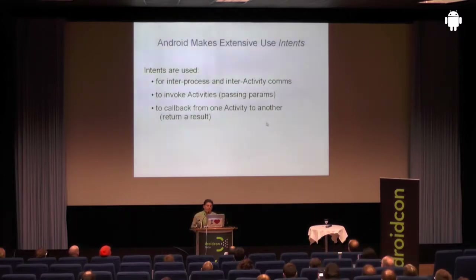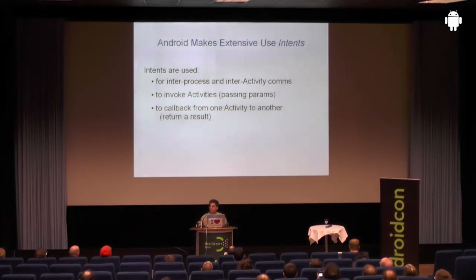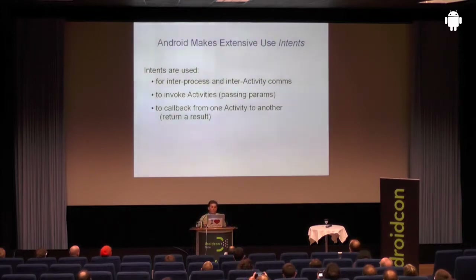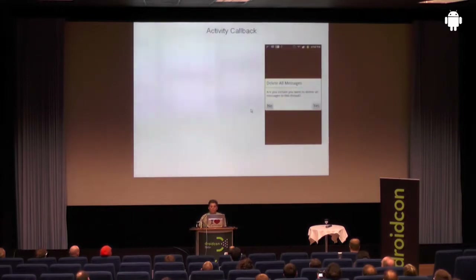Android makes extensive use of intents, which is a really charming, powerful, loose coupling to allow you to invoke other processes, ask the operating system for services, et cetera. And oftentimes what we want is some information back — maybe the URI of a picture, or some file name or some such thing. Android has a method for doing these callbacks, and that's what we're going to focus on primarily: the callback from one activity to another to return some sort of result.